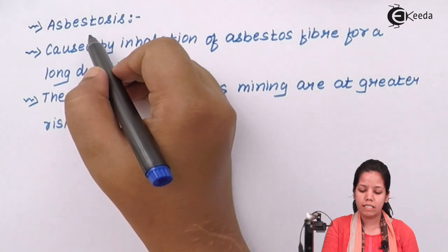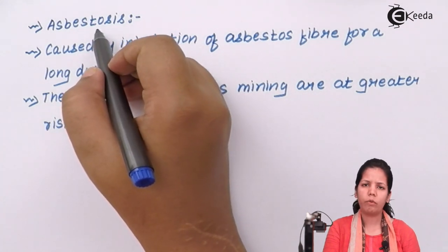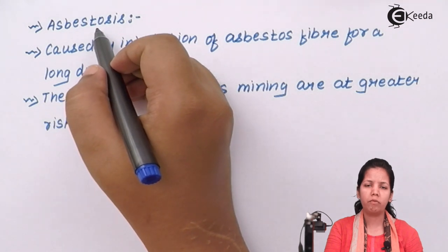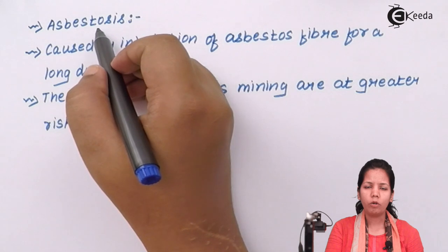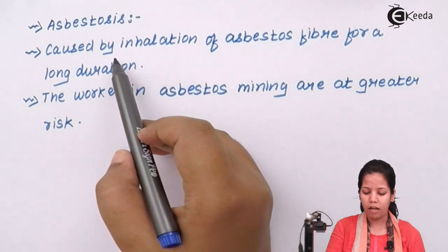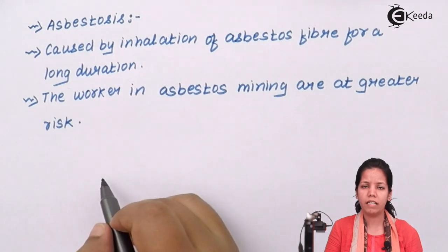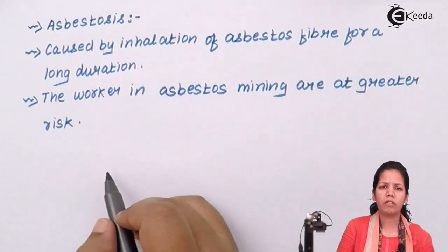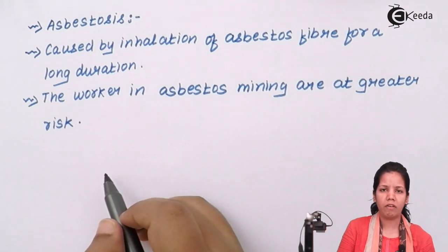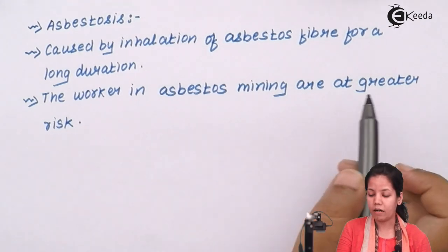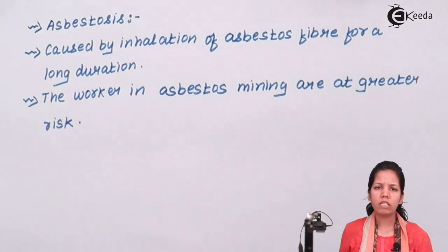The next occupational disease is asbestosis. Asbestosis is an occupational disease that affects people working in refineries — petrol refineries, crude oil refineries, or diesel refineries — where workers may not be subjected to proper prevention techniques. It is caused by inhalation of asbestos fibers over a long duration. Asbestos fibers are present in crude petrol, diesel, and mineral oil, and during the filtration or purification process, asbestos fibers may be inhaled if proper inhalers or masks are not provided.